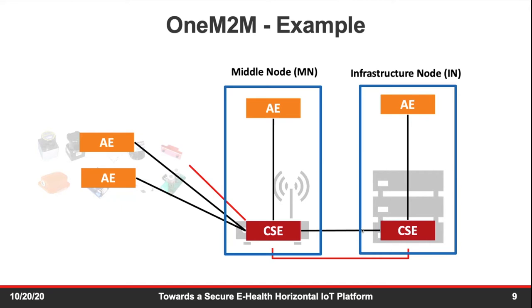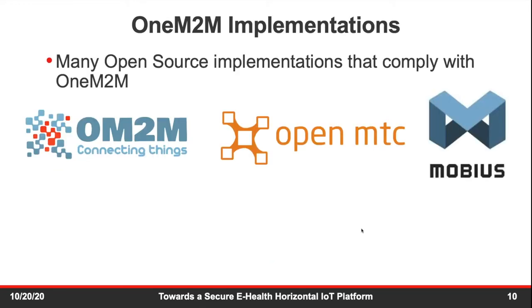oneM2M is a standard, not an actual implementation you can run on your machine. So there are many oneM2M implementations, most of which are open source. Some common ones are OM2M, hosted by Eclipse; OpenMTC, which started as a licensed product but moved to open source; and Mubias — though I'm not sure of my pronunciation as it's a German word, so pardon my German.